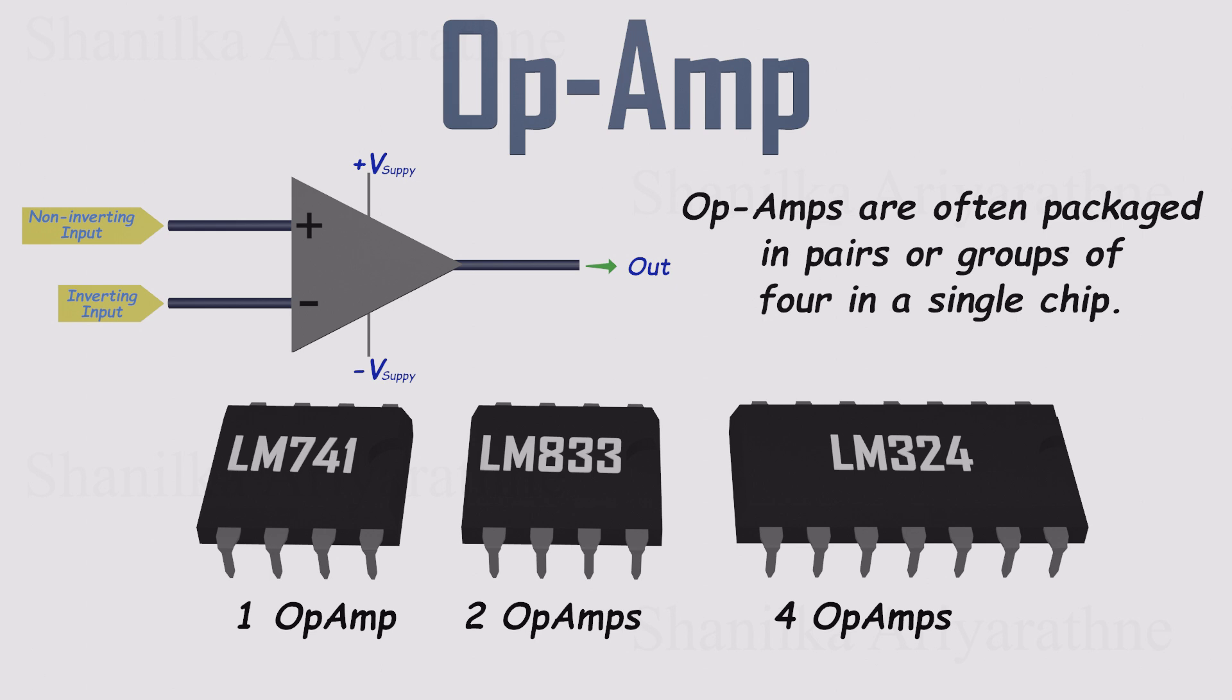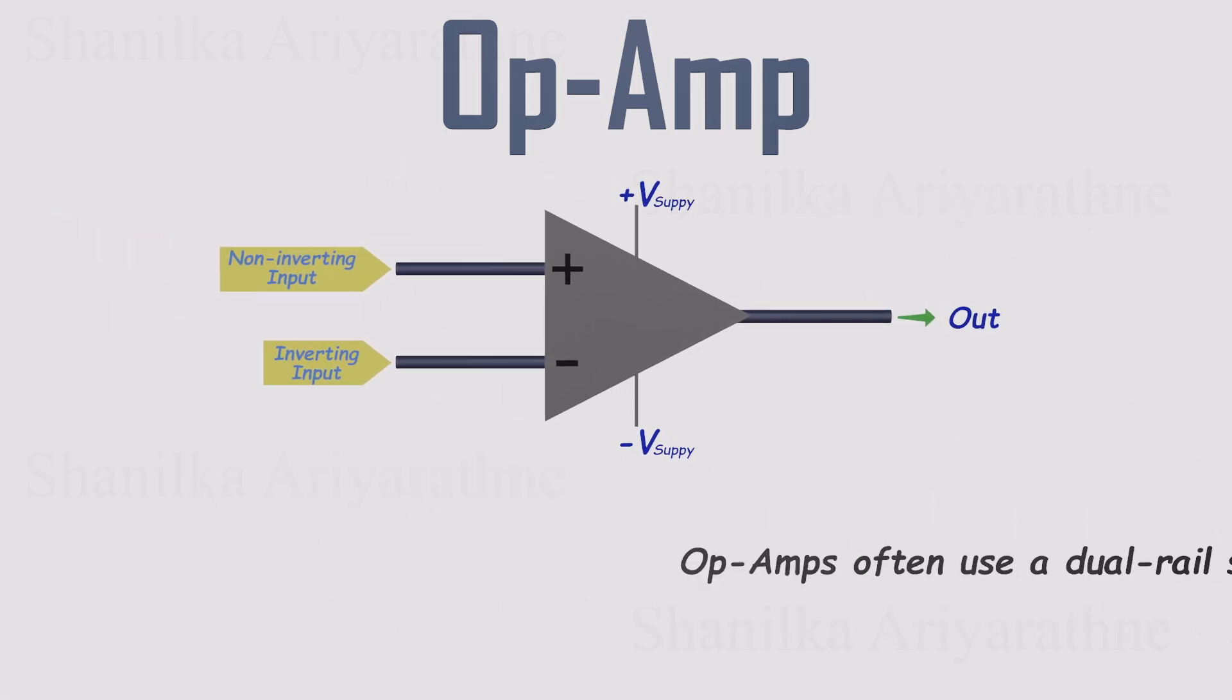And the best part? They're incredibly cheap. You can pick up dozens for less than the price of a coffee. To power an op-amp, we usually use a dual-rail DC supply.